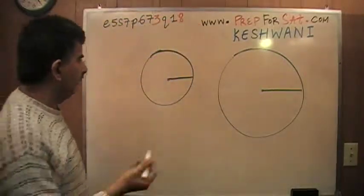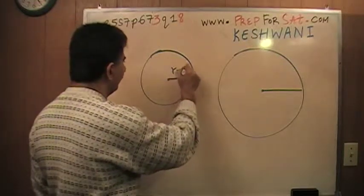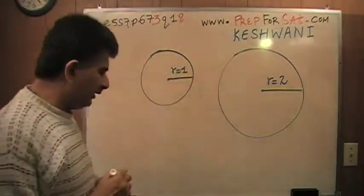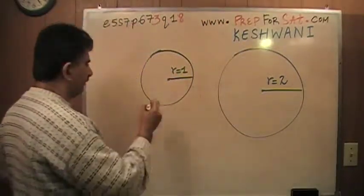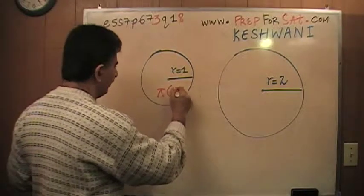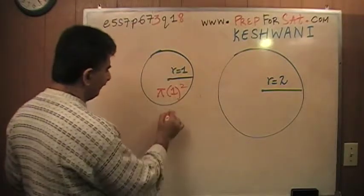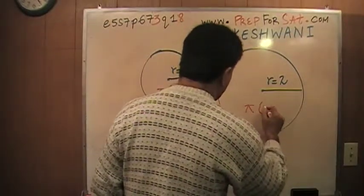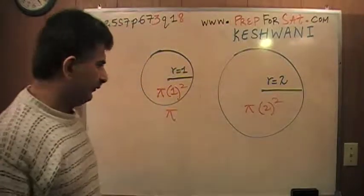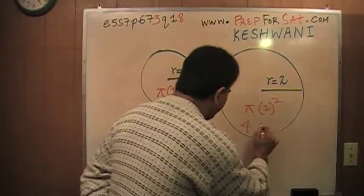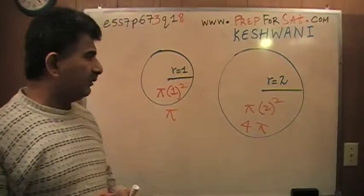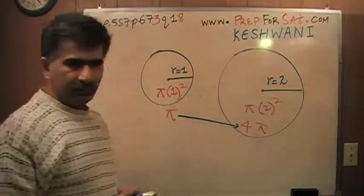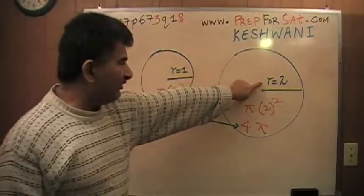Here's a small circle — let's say the radius equals one. And here's another circle where the radius equals two. The area of a circle is pi r squared. So the area of the small circle is simply pi times one squared, which is pi. The area of the large circle is pi times two squared, which is four pi. The area of the large circle is four times the area of the small circle, even though the radius is only twice as much.